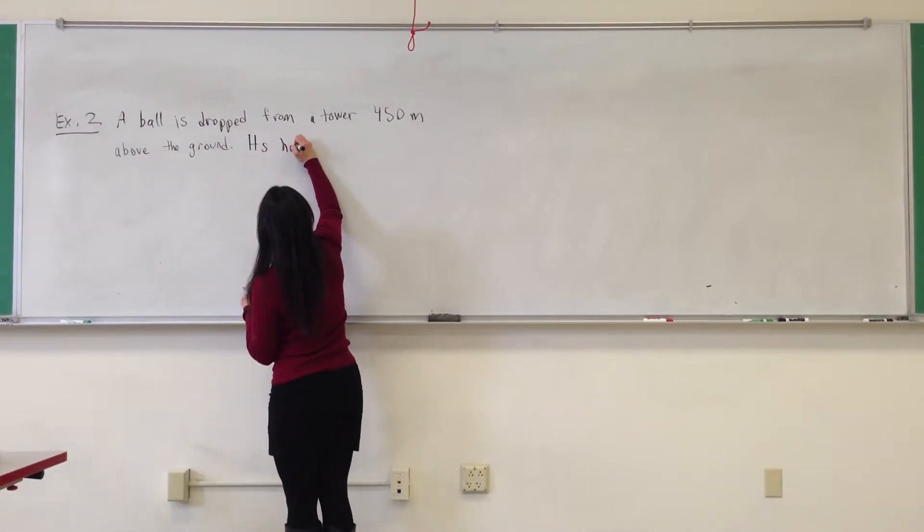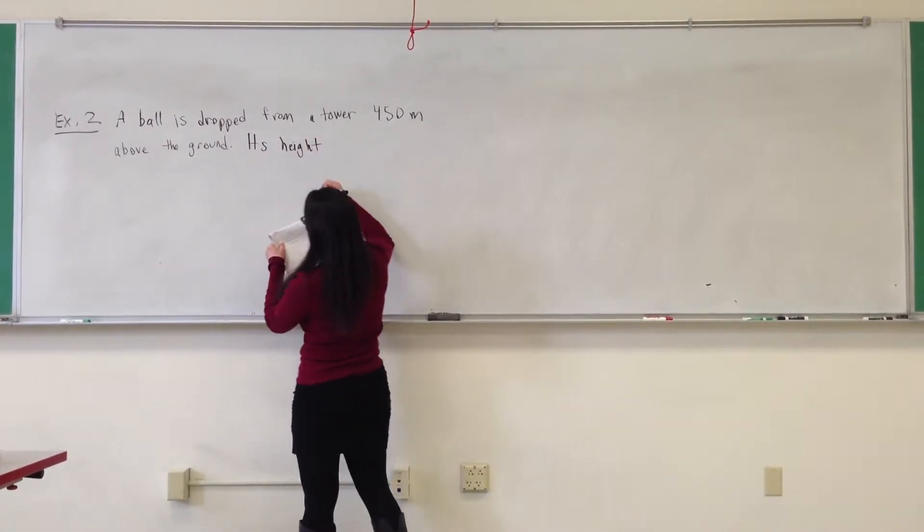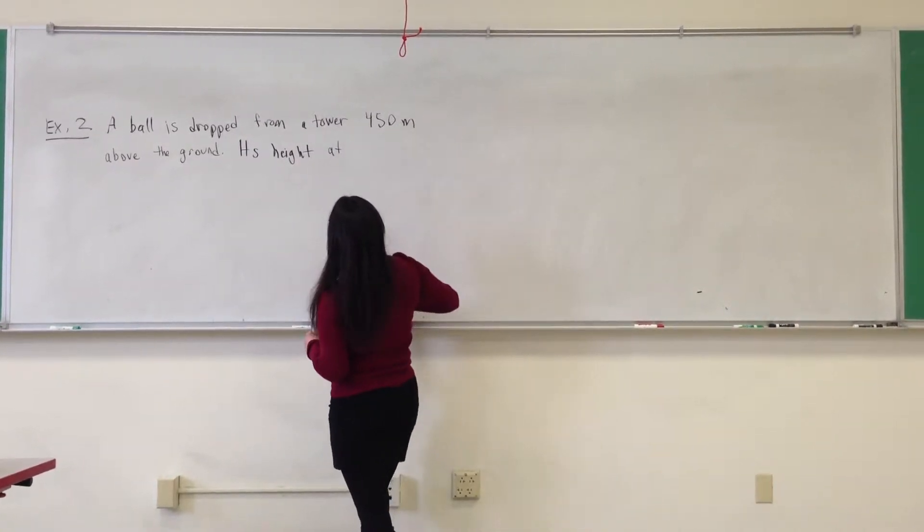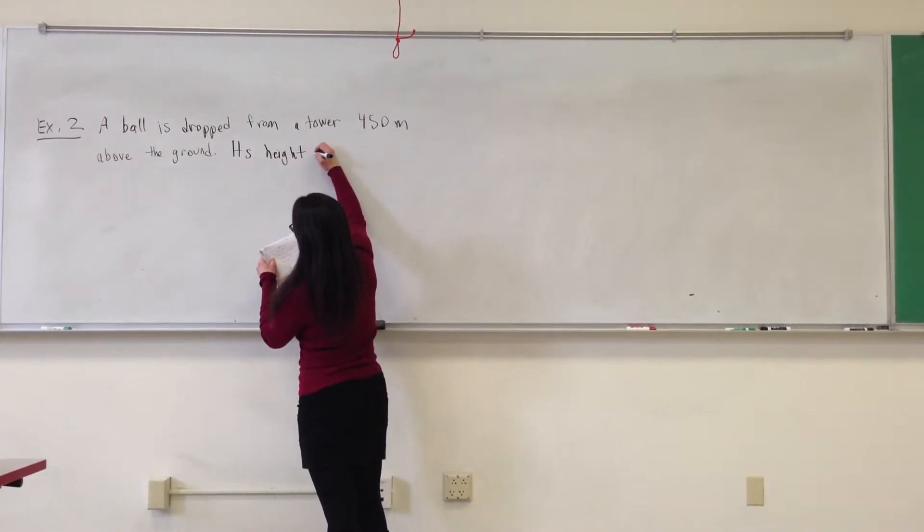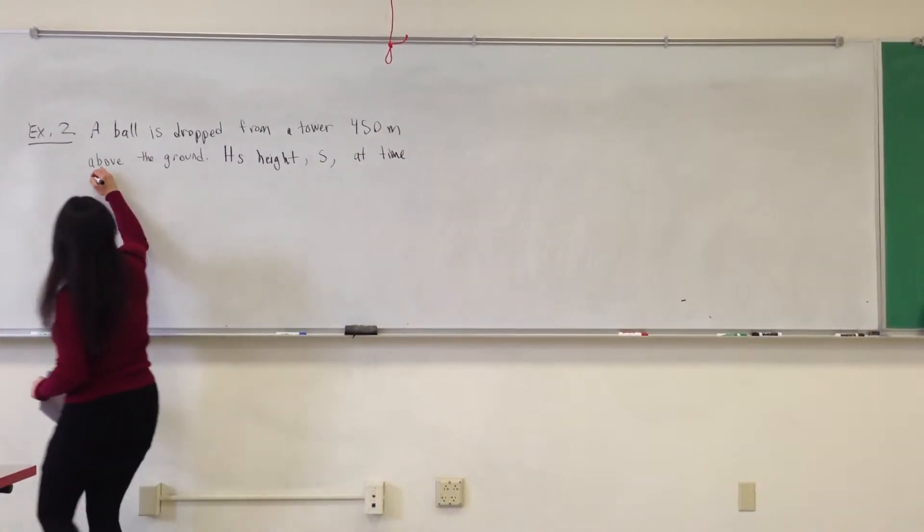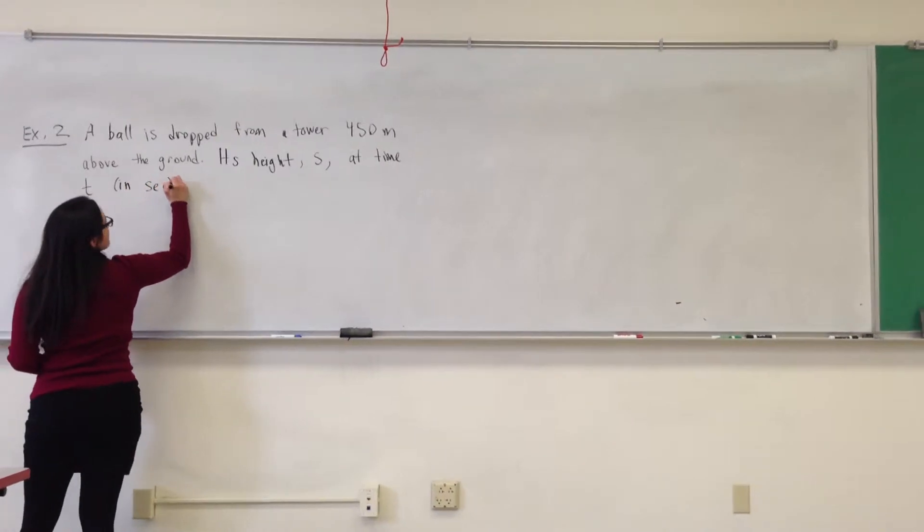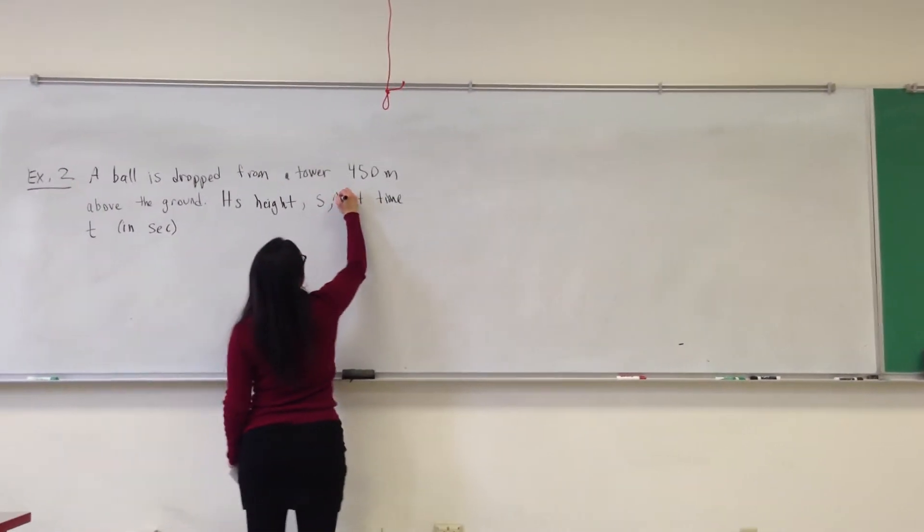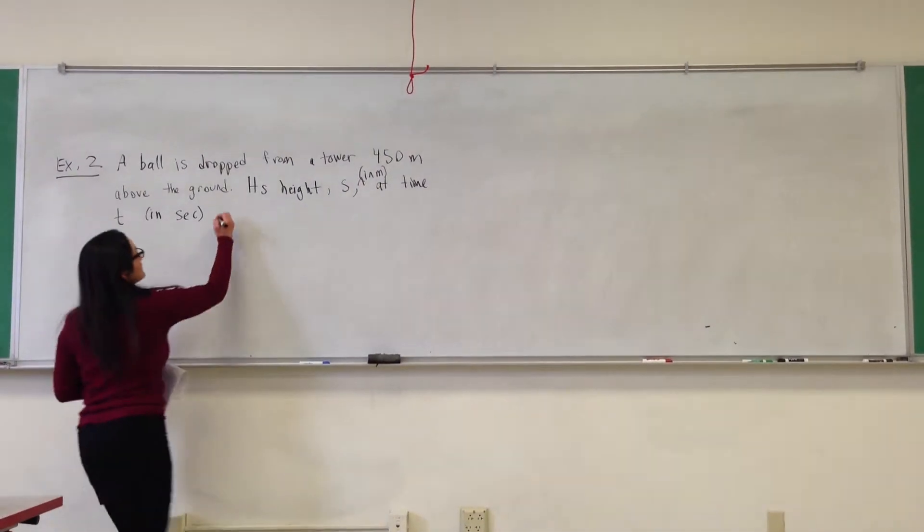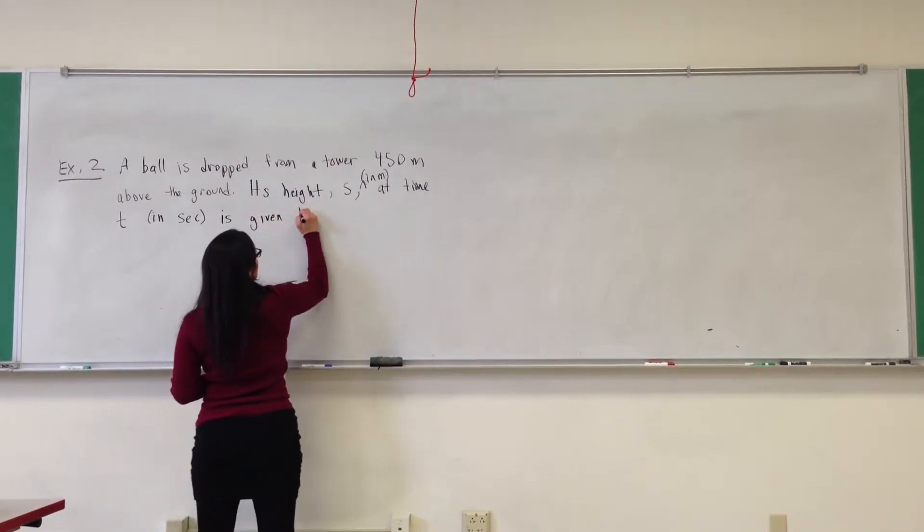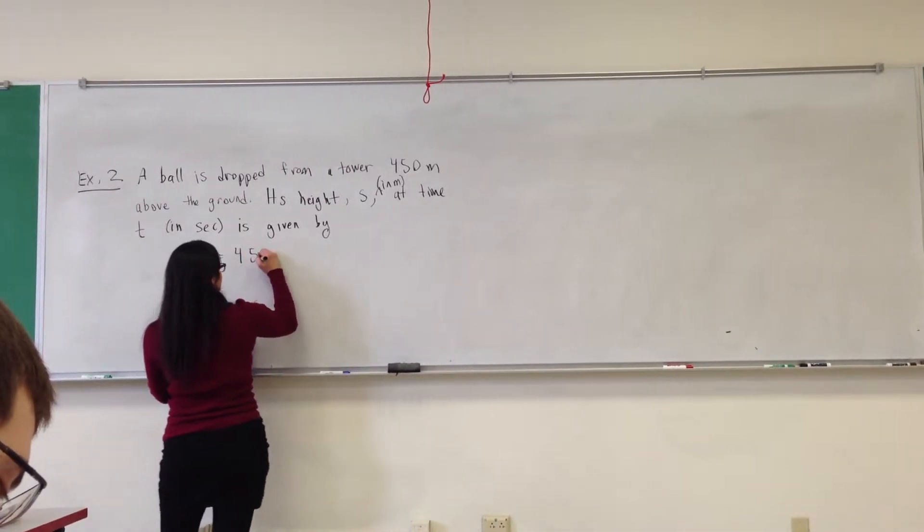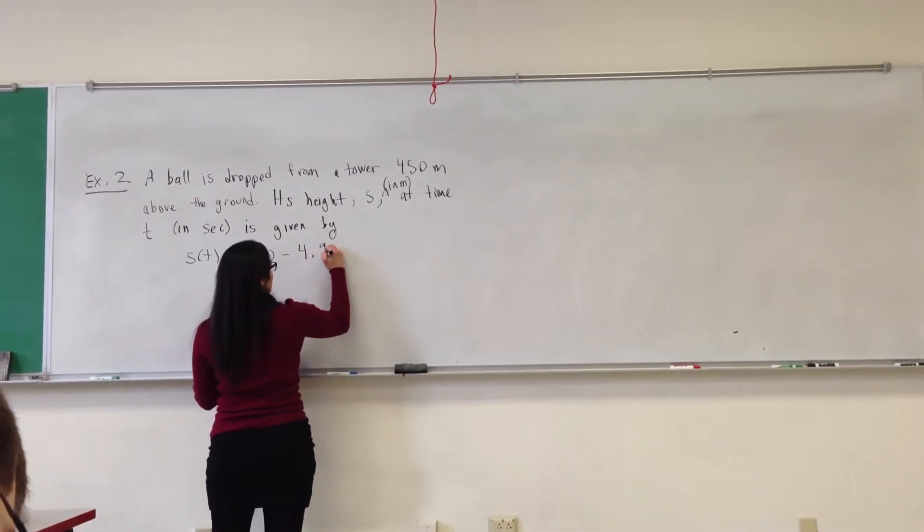The height of the ball at time t, its height, let's call it s, at time t in seconds, its height s in meters at time t in seconds is given by the formula s of t equals 450 minus 4.9 t squared.